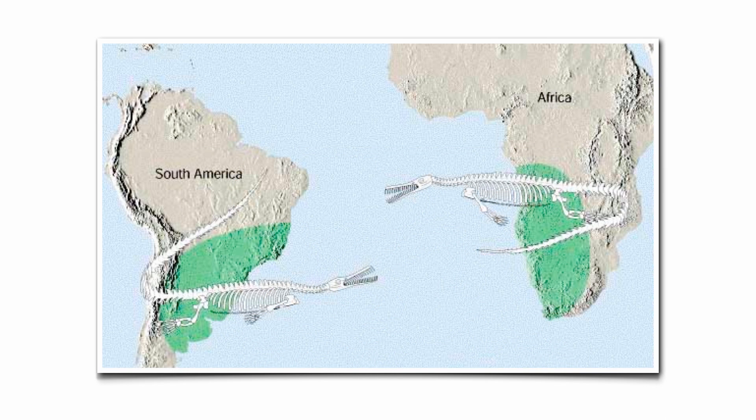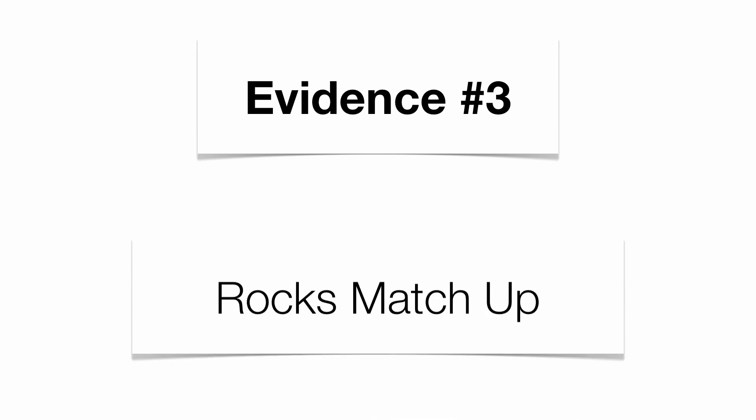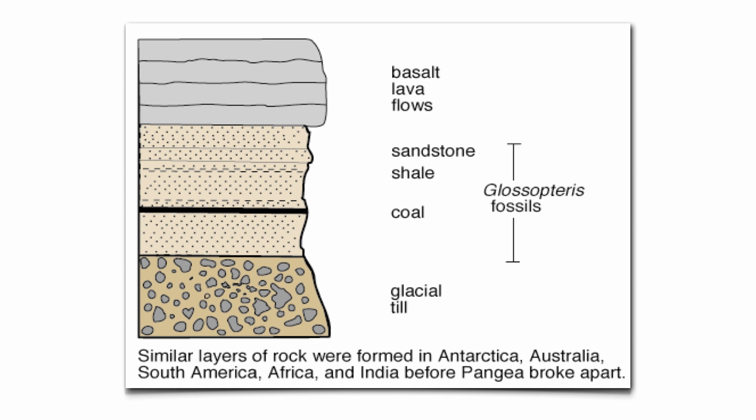So if the fossils matched up — as in the example of Mesosaur — then the rocks must have matched up too, and that's evidence number three. If you have a basaltic lava flow, then sandstone, then shell, then coal, then glacial material in South America, and within those rocks you find Glossopterus fossils, it's not coincidental that the exact same sequence is found in Africa. It's simply the same rock layers that got broken up when the continents split apart.